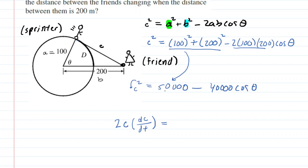On the other side, we have the derivative of 50,000, which is a constant. We know the derivative of any constant is zero. And then minus 40,000, we have to multiply by the derivative of cos theta, which is negative sine of theta. But then again, we have to multiply by the derivative of our variable theta with respect to time. So d theta dt.